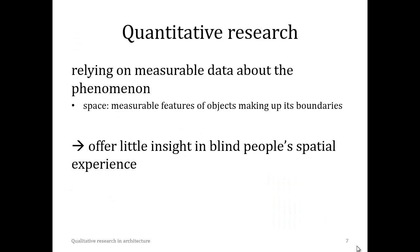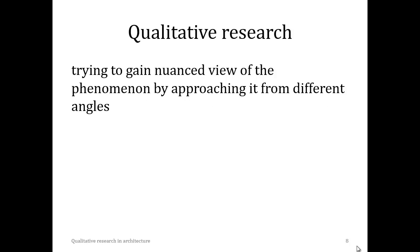If you want to gain a better understanding of the spatial experience of blind people, however, collecting and analysing these measurable data about blindness and space do not help you that much. For instance, the fact that in the auditorium just referred to the Speech Transmission Index varies between 0.36 and 0.50 with an average of 0.44 does not tell you much about how it is experienced by blind people. To gain a better understanding of blind people's spatial experience, a qualitative research approach is more suited.